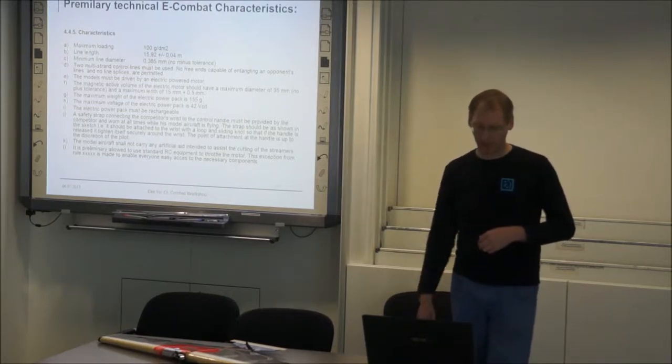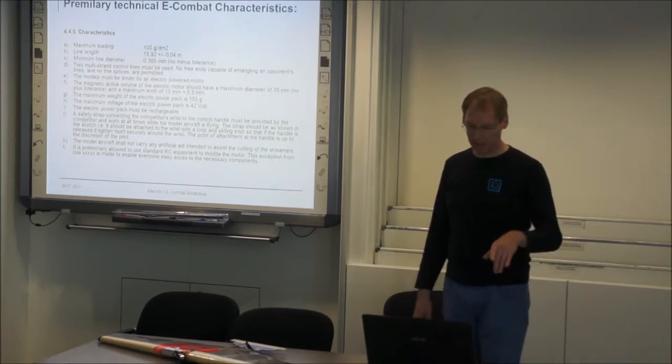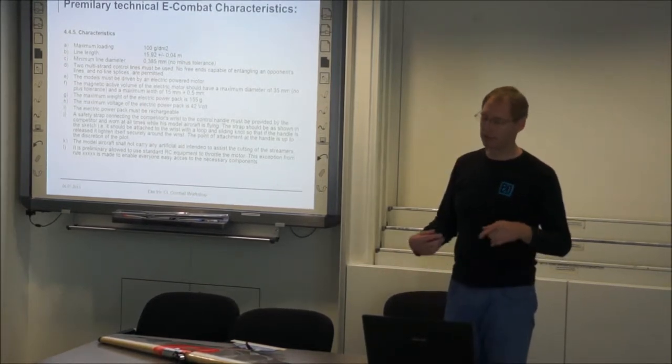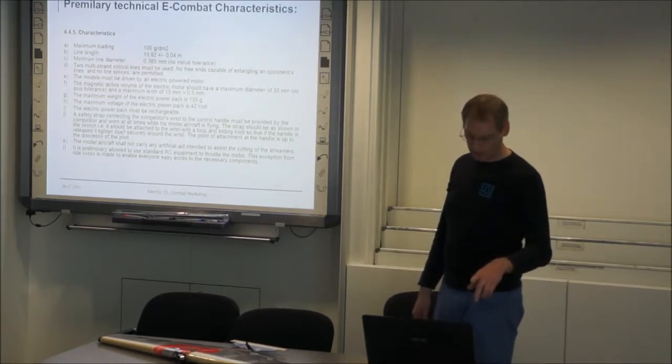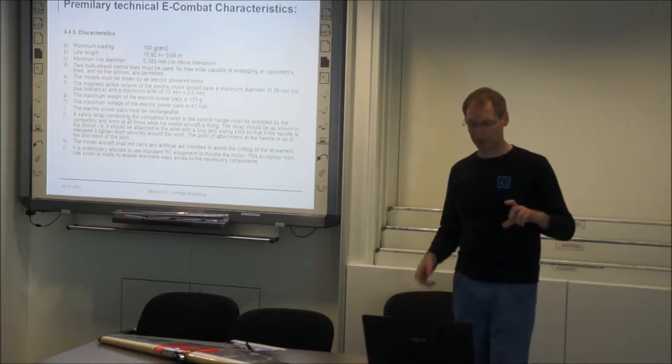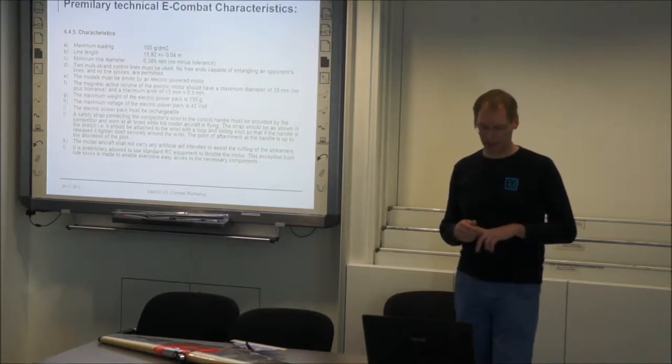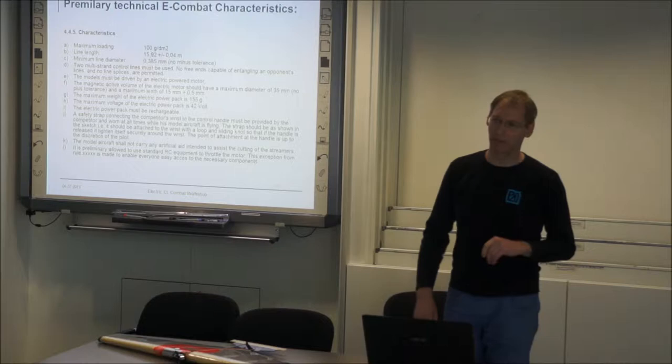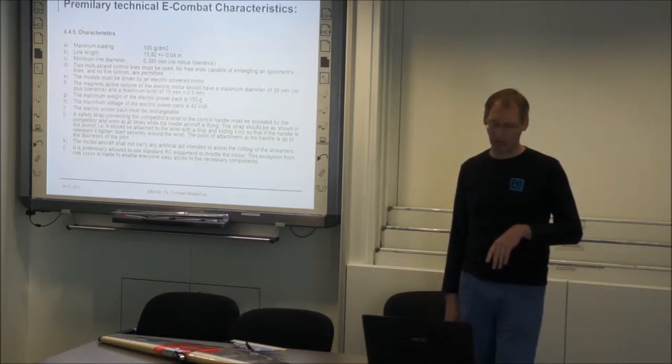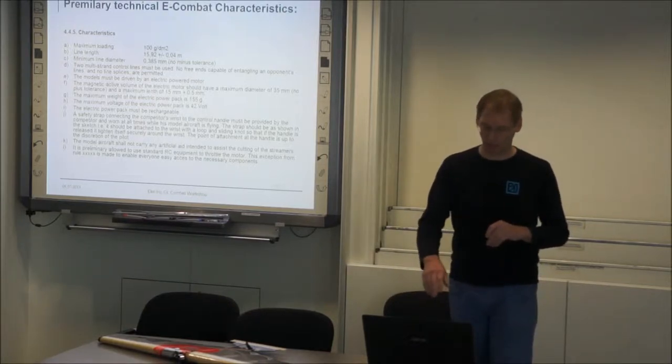I have here a selection of the technical e-combat characteristics in our preliminary rule. I took as most as possible the F2D rule. I showed away what's not necessary for electric. And I took from F2G, the electric speed, the 42 volt limit. So maybe we can reduce this. But I think 42 volts are safe. It's only for safety, the 42 volts.